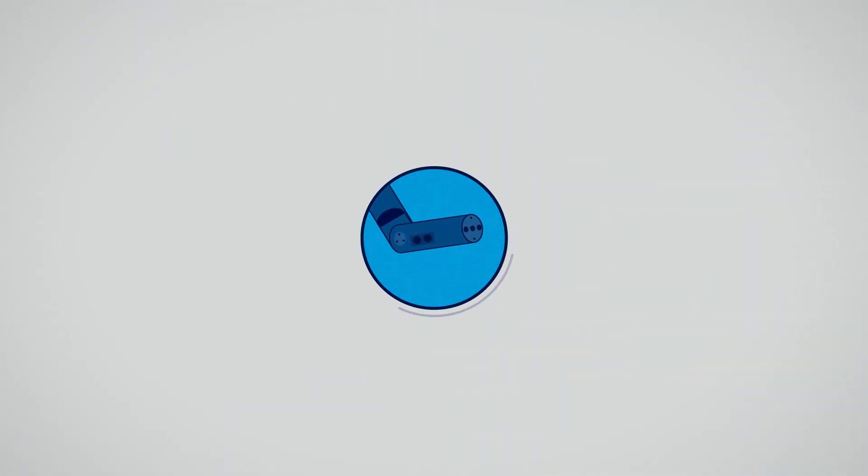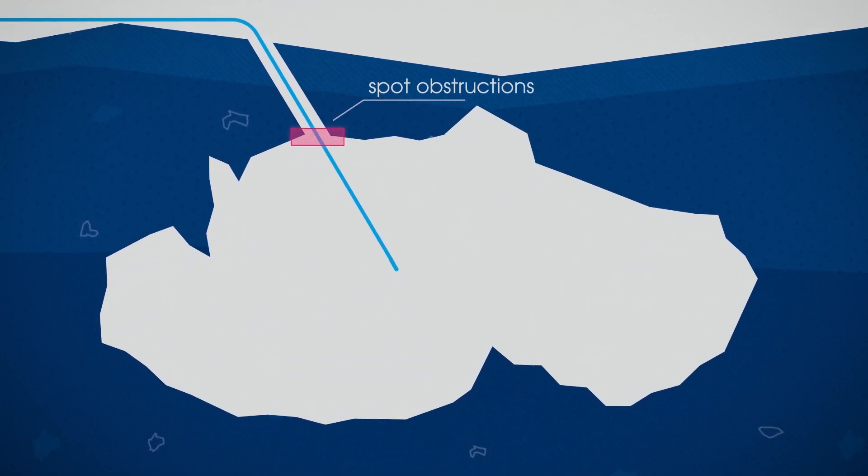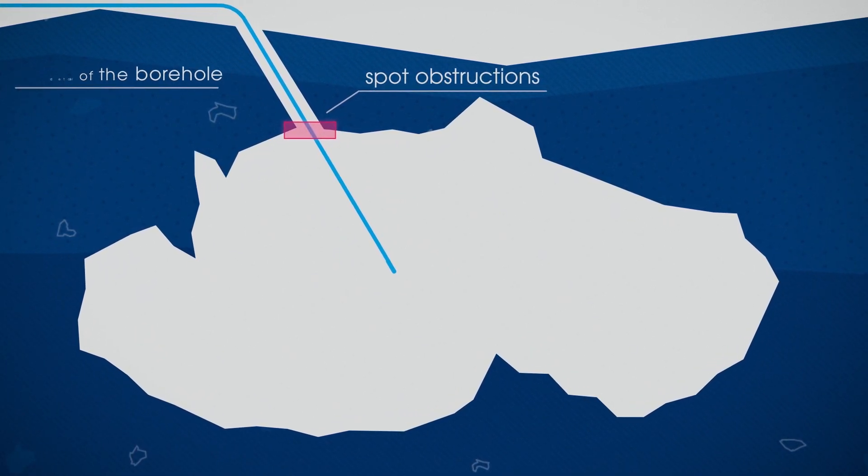The CALS nosecone camera, in conjunction with Carlson Scan software, lets you spot obstructions, see details of the borehole, and know when you've entered the void.